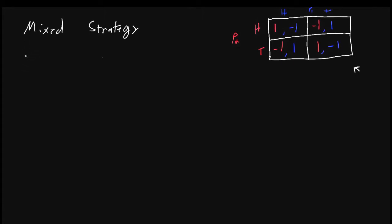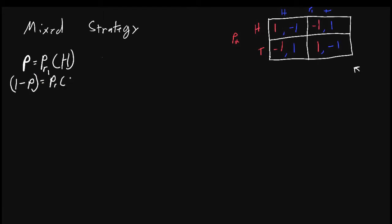To do that, we need to introduce a little bit of notation. Let p equal the probability that player one plays heads. That means one minus p — because there are only two actions — is equal to the probability that player one plays tails.